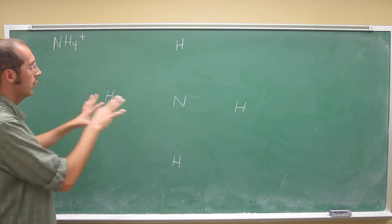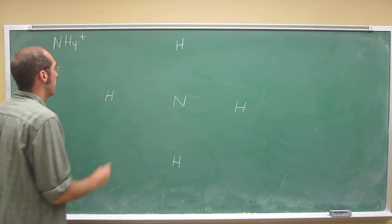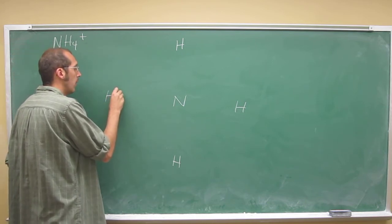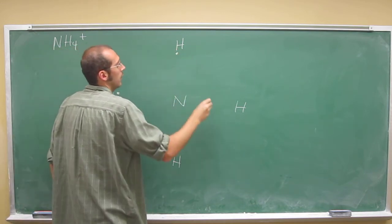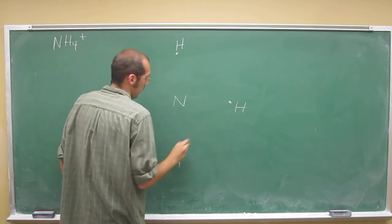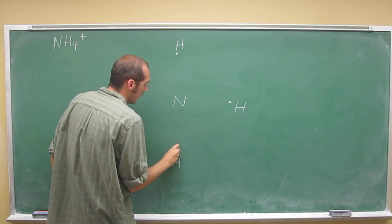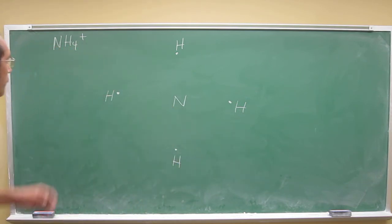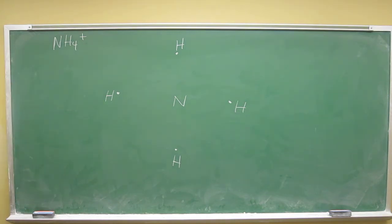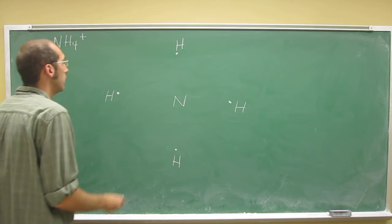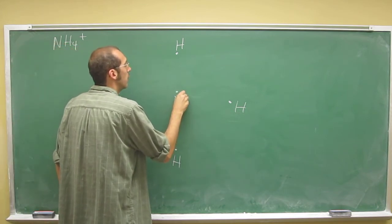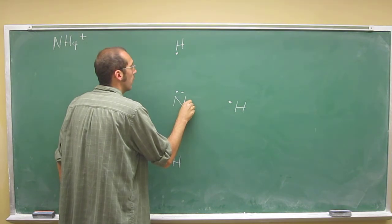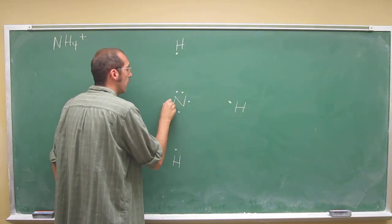So let's draw the normal Lewis structures of all of these atoms. Remember, we're going to want to put one electron in the direction on each of these hydrogens in the direction towards the central atom. Nitrogen, since it's in group 15, has five valence electrons. So one, two, three, four, five.